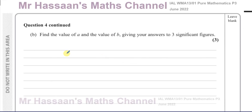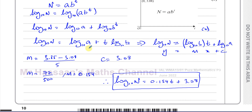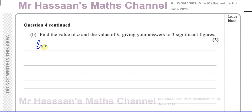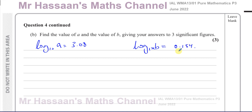Now for part B: find the values of A and B to three significant figures. Going back to the linear equation, log base 10 of B is the gradient, which equals 0.154, and log base 10 of A is the y-intercept, which equals 3.08. Using the definition of logarithms, A equals 10 to the power of 3.08 and B equals 10 to the power of 0.154.